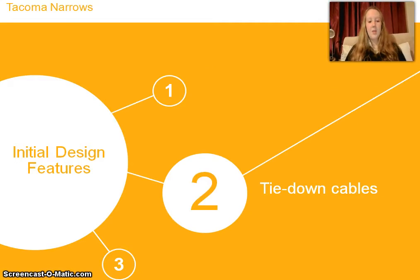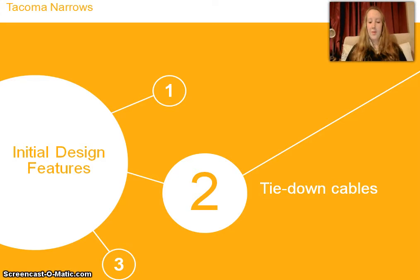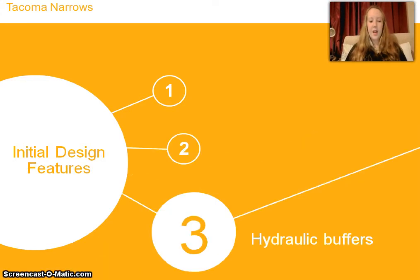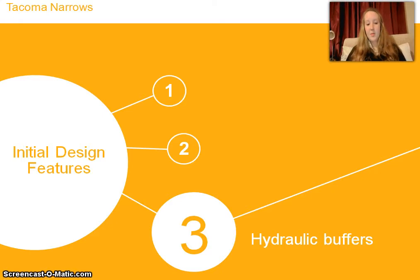Tyrode cables were attached to plate girders to dampen oscillations, but these snapped shortly after installation, so were never in use. Hydraulic buffers were installed between the towers and floor system of the deck to damp longitudinal motion, but these were damaged when the bridge was sandblasted before it was painted, so they were never in use either.